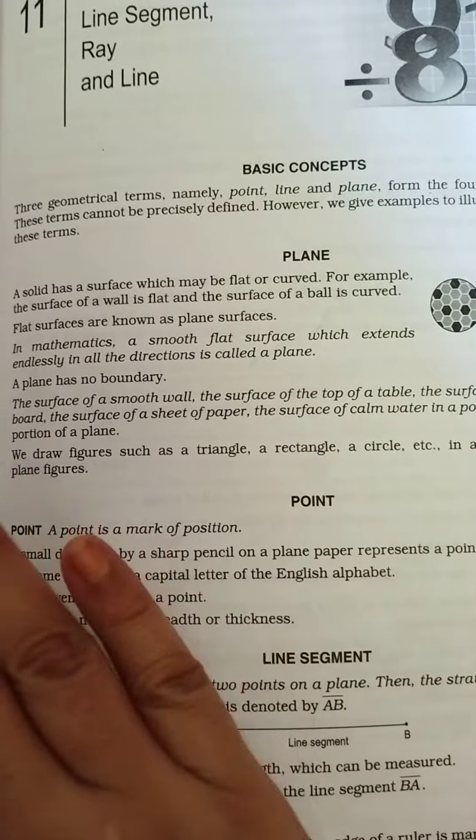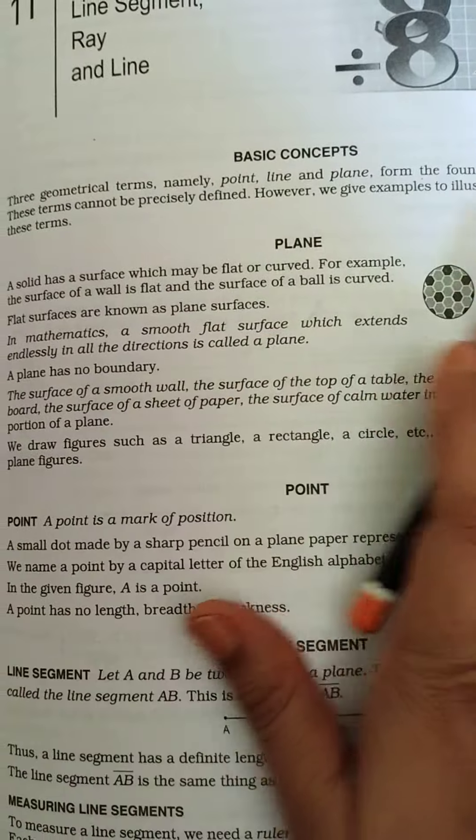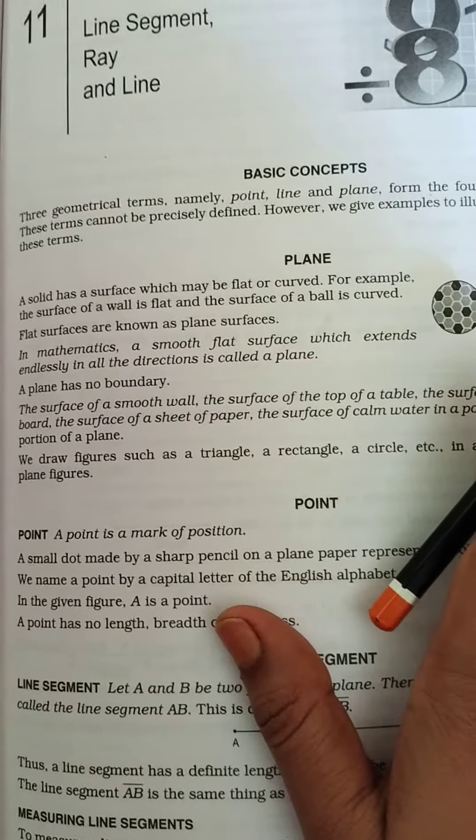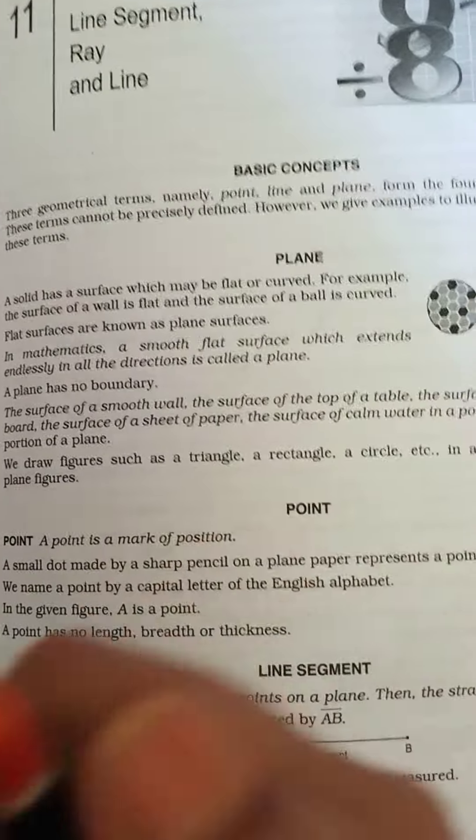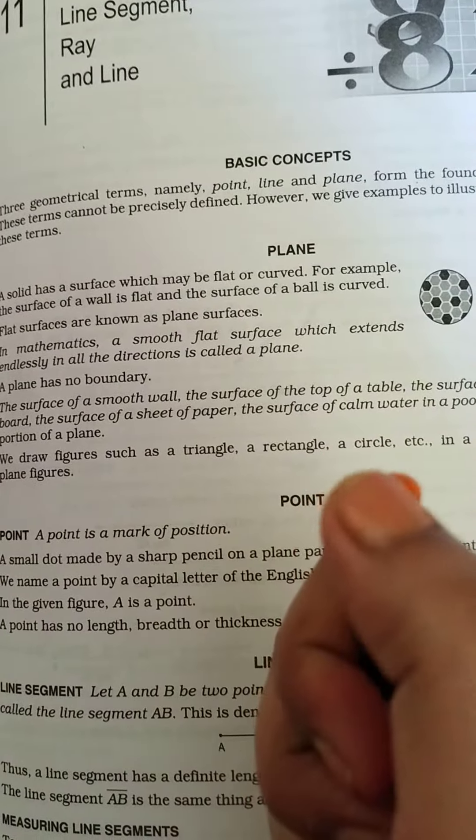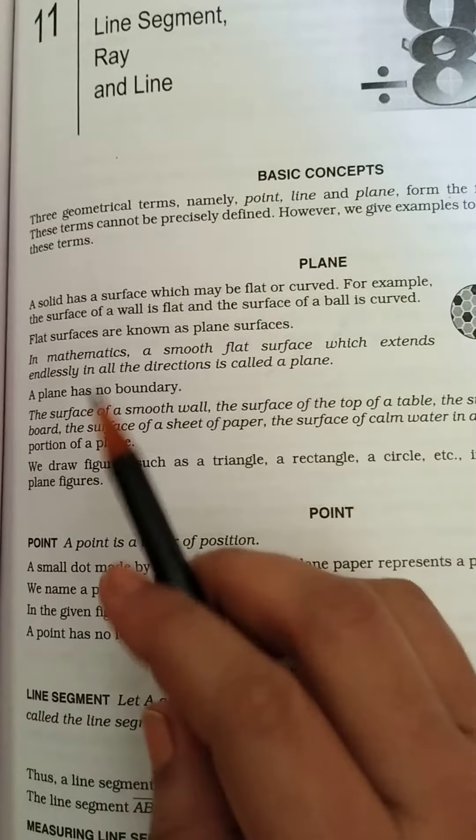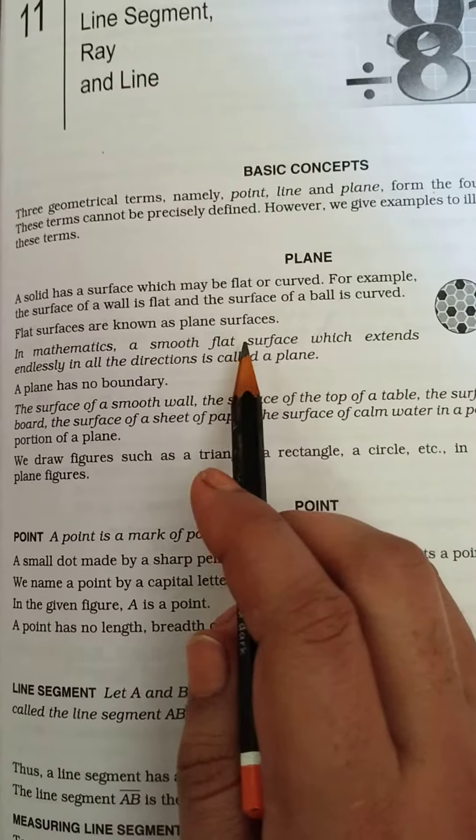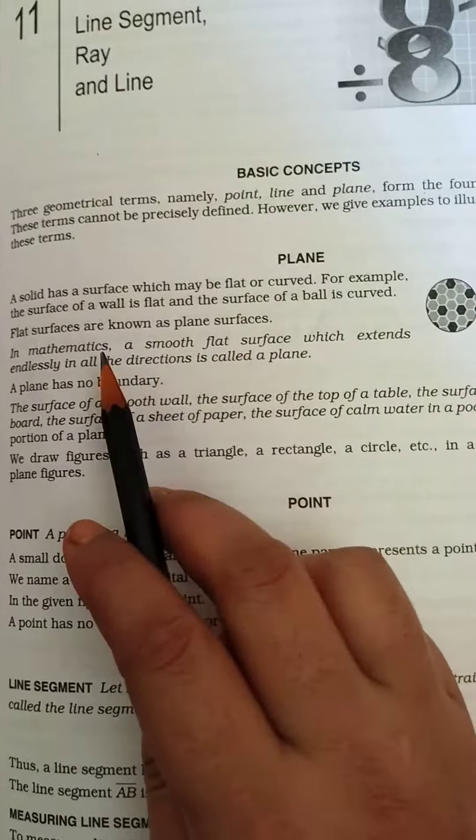A solid has a surface which may be flat or curved. For example, the surface of a wall is flat, the surface of this book is flat, and the surface of a ball is curved. The surface of the tip of the pencil is curved.